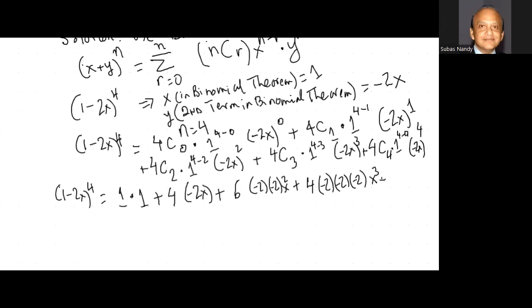The last term: 4C4. Type 4, math, PROB, scroll down to number 3 which is nCr, hit enter, then r is 4, so type 4 — and 4C4 equals 1. Multiply it by 1 to the power of 4 minus 4, times minus 2 to the exponent 4, times x to the 4.